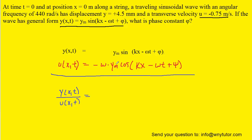Notice that when we divide the two equations, the y sub m will cancel. Sine divided by cosine, of course, becomes tangent. Also notice that when we divide the equations, we're going to have a factor of negative omega in the denominator.